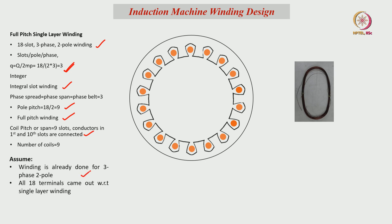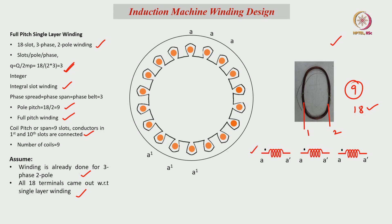Assume the winding is already done for 3 phase 2 pole and all 18 terminals are taken out. Each coil has 2 terminals — terminal 1 and 2 — and like this, 9 coils we have, so total 18 terminals are taken out. The first coil is placed in slot 1 and slot 10, second coil in slot 2 and slot 11, third coil in slot 3 and slot 12. These are the 3 coils related to the A phase.